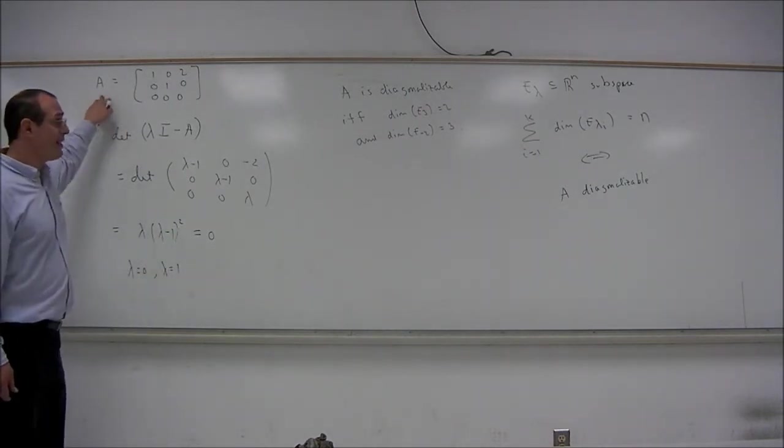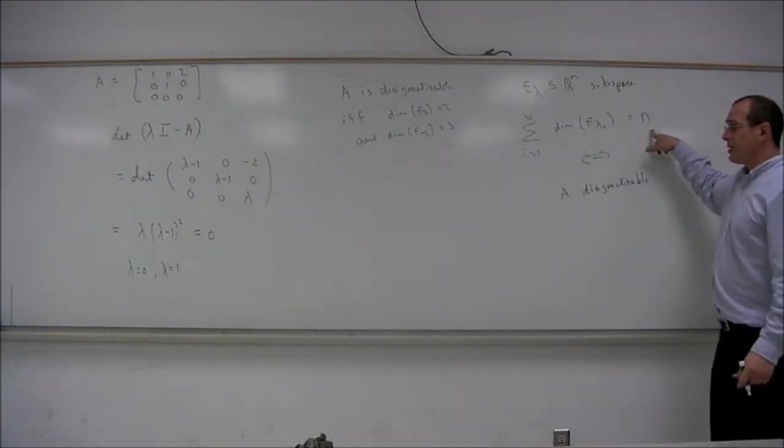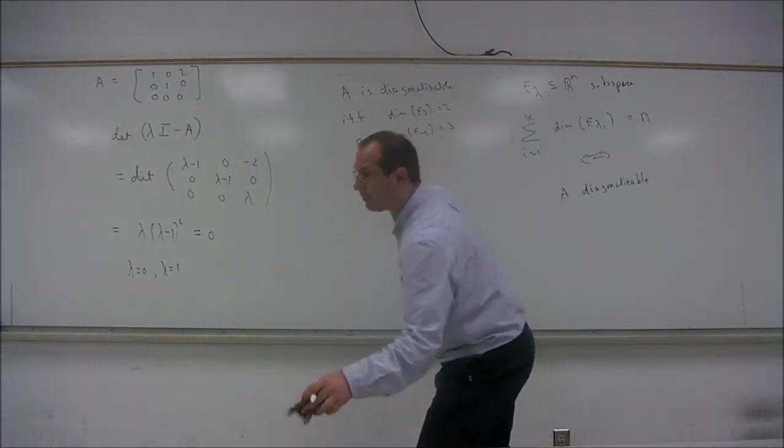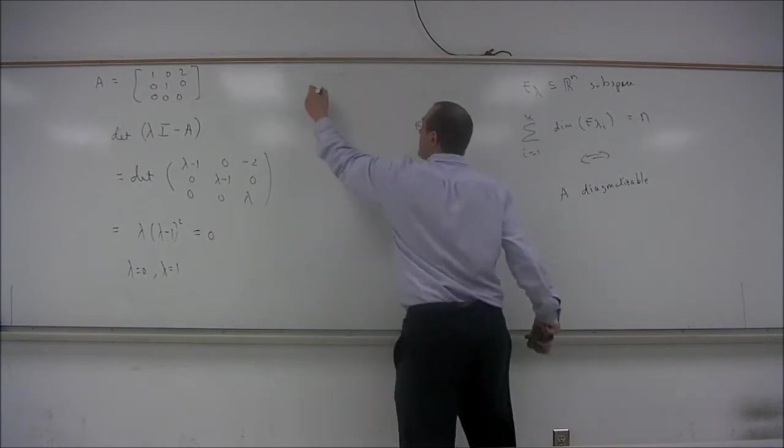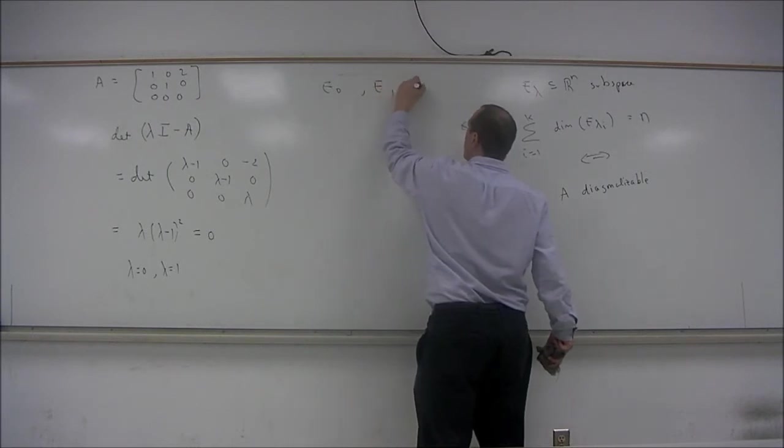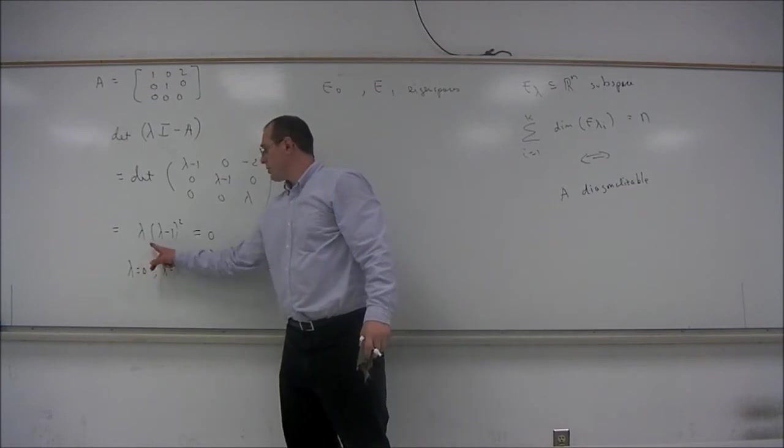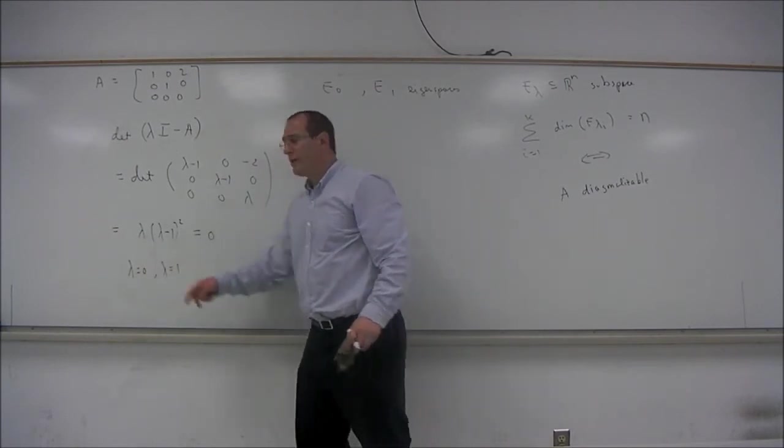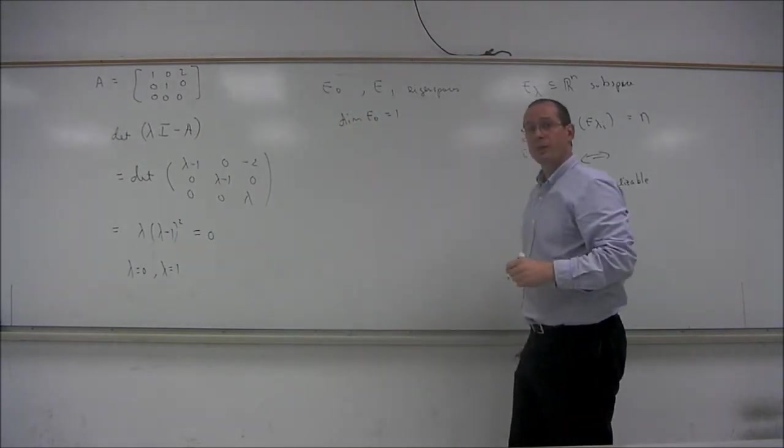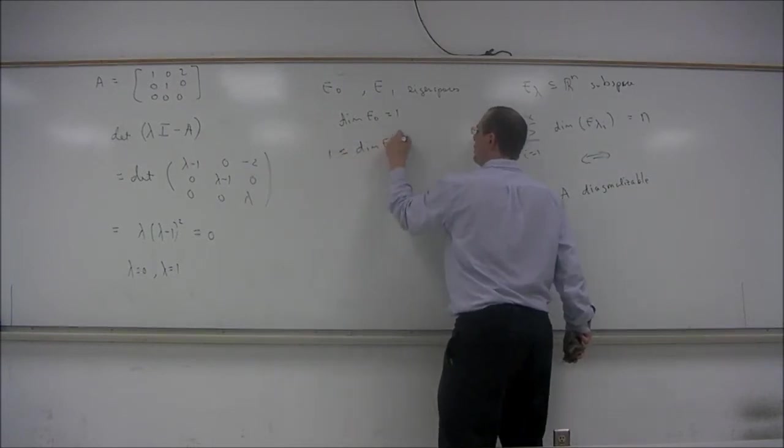So this matrix A is diagonalizable if and only if the sum of the dimensions of the eigenspaces is 3. So here, if there are two eigenvalues, those eigenvalues are called E0 and E1. Those are the eigenspaces. Since 0 is a root of multiplicity 1, the dimension of E0 is 1. On the other hand,